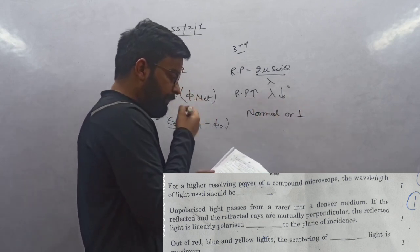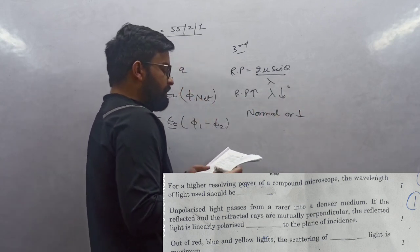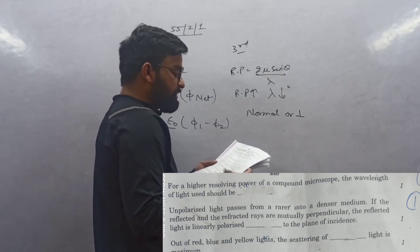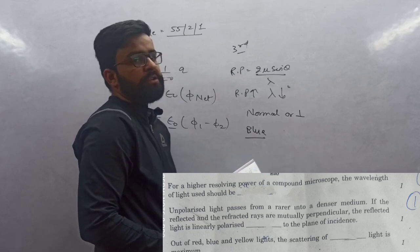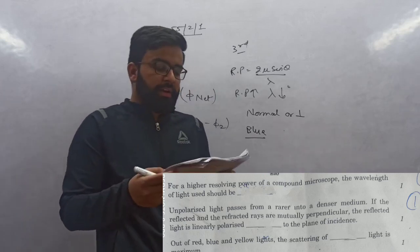Question 15: Out of red, blue and yellow, the scattering of which light is maximum? Answer is blue. Why is blue scattering maximum? Because of least wavelength.